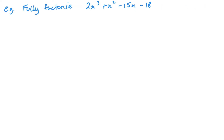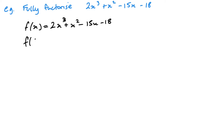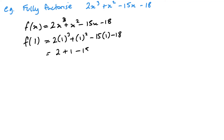Now, to fully factorise a cubic, the first thing I need to do is work out a single factor of it. So I'm letting f(x) equal that cubic, and then I want to substitute values in. I want to start around 1, then minus 1, then 2 and minus 2 — it's always around those values that you'll find your answer. So here we've got 2 plus 1 minus 15 minus 18, and that's going to give me minus 15, so that's no good.